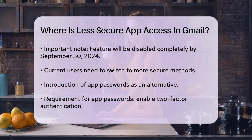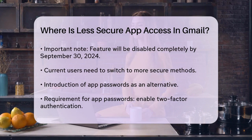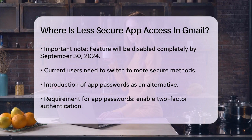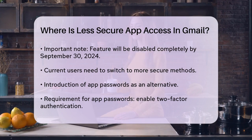One option is to use an app password, which is like an alternate password for your account that can be used by specific applications. To set up an app password, you need to have two-factor authentication enabled on your Google account. Then, you can generate an app-specific password in the security settings of your Google account.